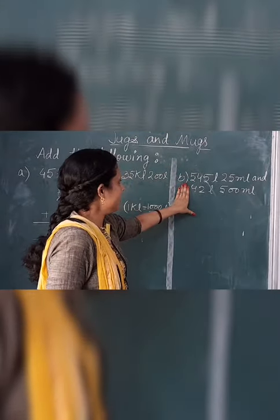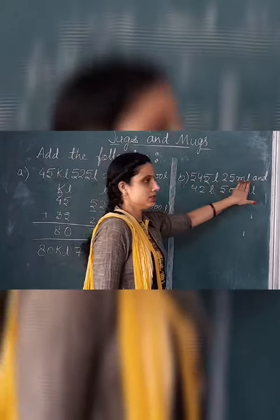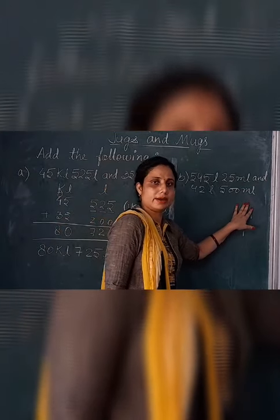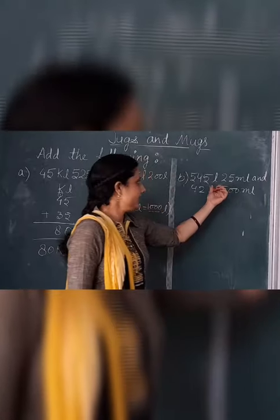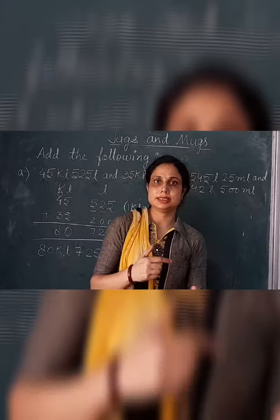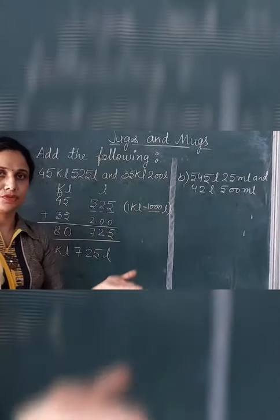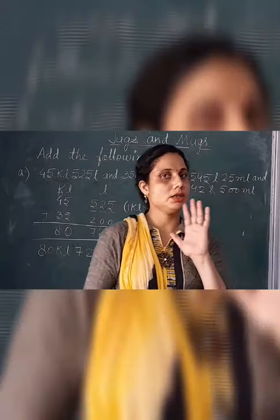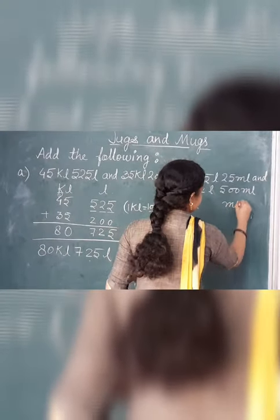The next question is Part B: 545 liters 25 milliliters and 42 liters 500 milliliters. There are two other units of capacity here — liter and milliliter. We compare the two units. If we look at the table, liter comes first, which means liter is greater than milliliter. So first we write liter, then milliliter.